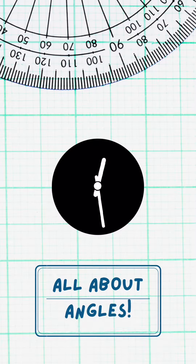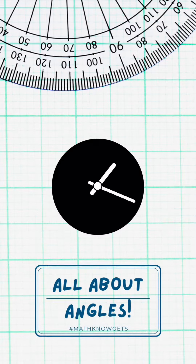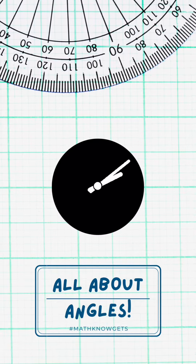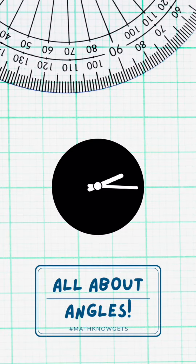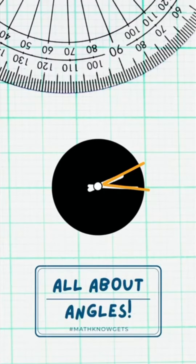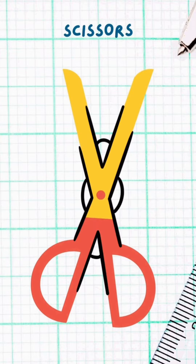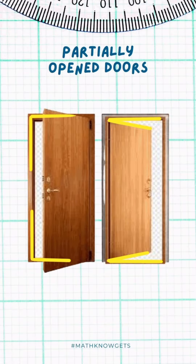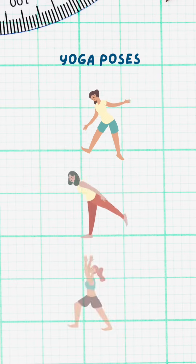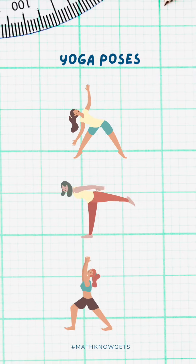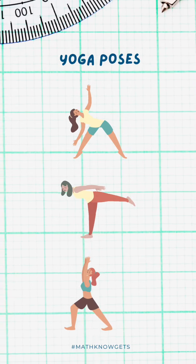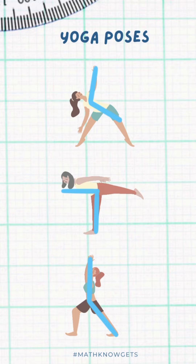Have you noticed the two hands on a clock? The two hands create a set of lines from a common point that forms an angle. We can find angles in scissors and partially open doors while exercising. We also make different angles in different poses.